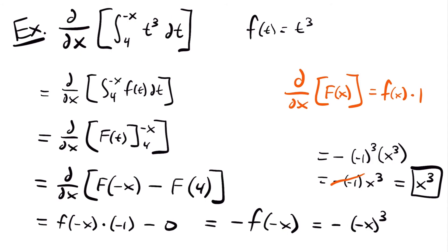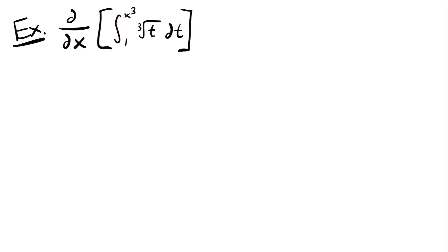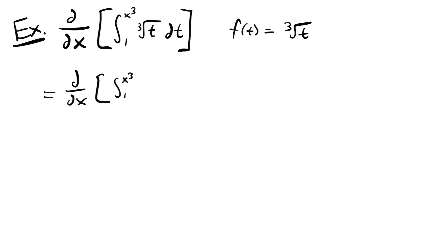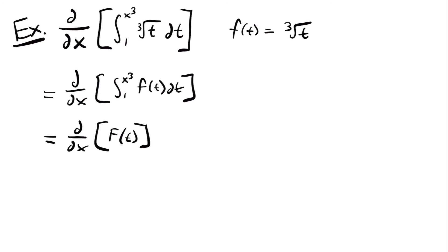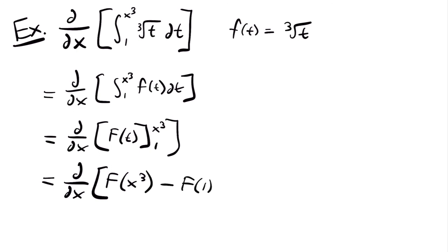Let's look at another example. For our next example, we have the derivative of the integral from 1 to x cubed of the cubed root of t dt. Let's set our integrand equal to f of t, so f of t is equal to the cubed root of t. Rewriting: the derivative of the integral from 1 to x cubed of f of t dt. We integrate this function, giving us the derivative of the antiderivative of our function evaluated from 1 to x cubed.